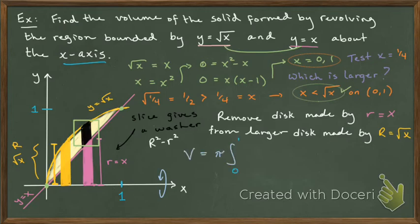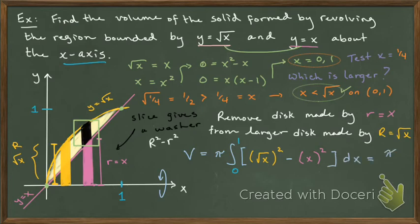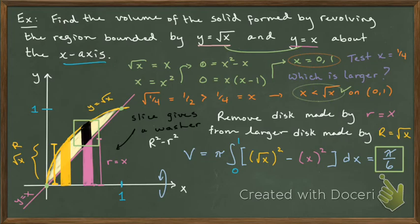The volume is π times the integral from 0 to 1 of capital R squared minus little r squared dx, where capital R is the square root of x and little r is x. So the integral is π times the integral from 0 to 1 of (√x)² minus x² dx. Once we integrate, we end up with π over 6. Take some time to evaluate that antiderivative yourself and plug in 0 and 1 — you should get π over 6.